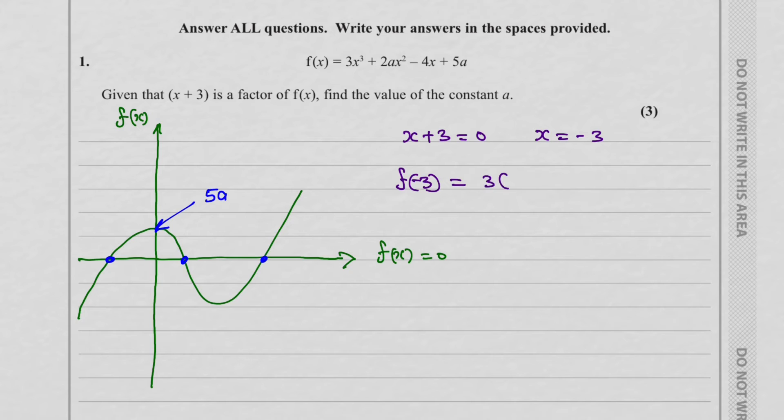So now we can say f of minus 3 will be equal to 3 into bracket minus 3 cube plus 2a minus 3 squared minus 4 into bracket minus 3 plus 5a. So what that means is that f of minus 3 will be 0.